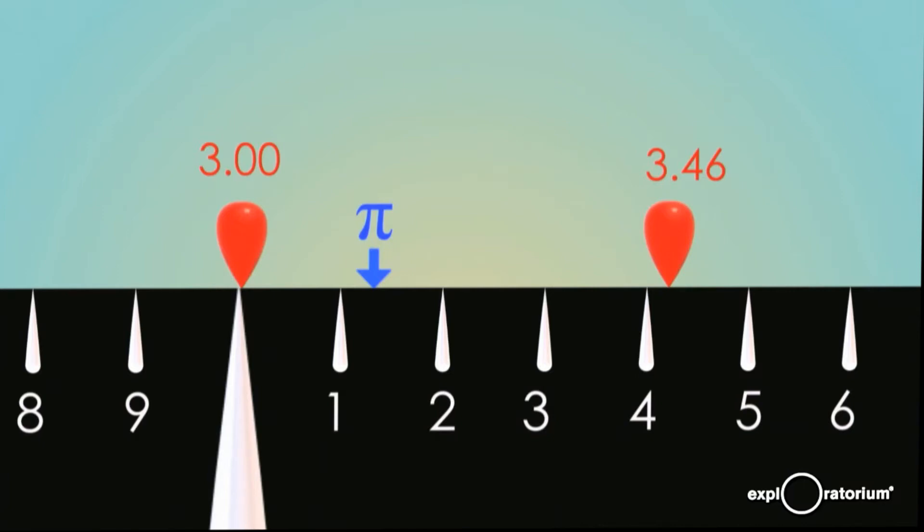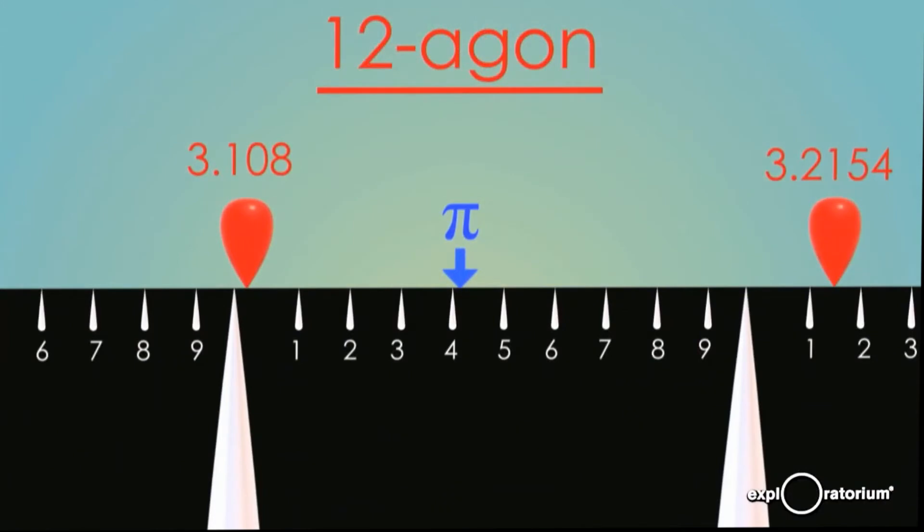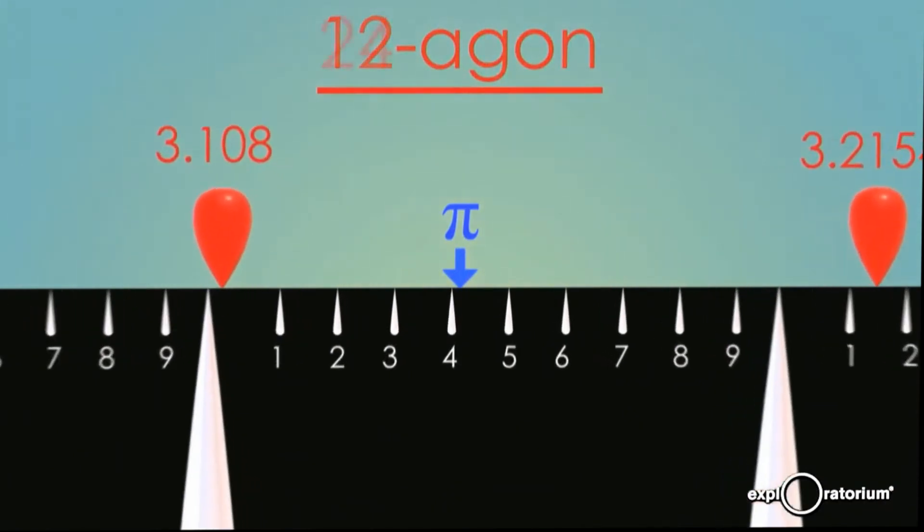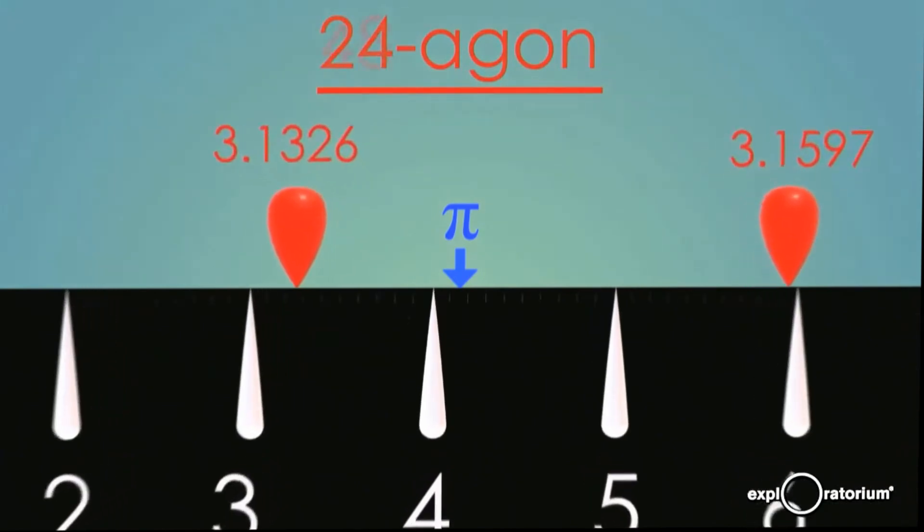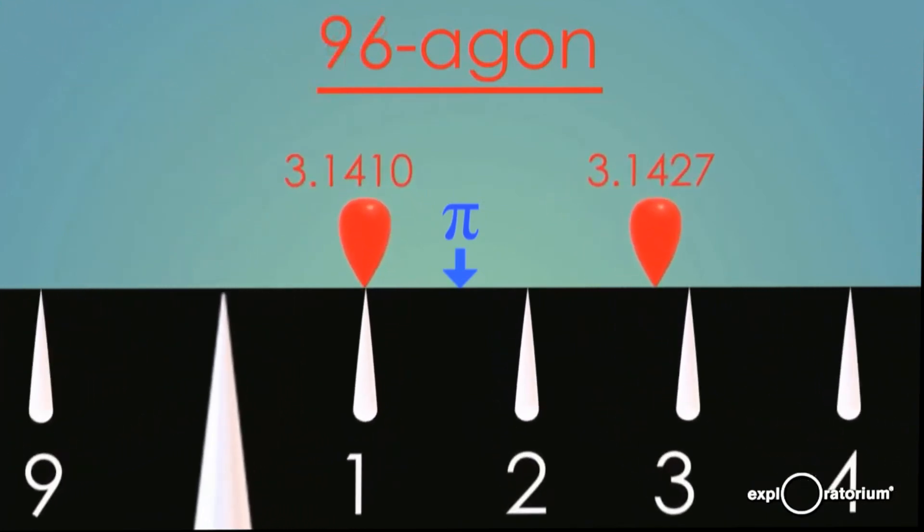So in principle, you could start over and do it with a tenagon or something like that. But the third observation that Archimedes made was that there's actually a trick to this. So this is the estimate we got by calculating with a polygon that had six sides. And if you know this estimate, there's actually a way to go directly from this estimate to the estimate you'd get from a polygon with twice as many sides. So we can go directly from a six-agon to the estimate we'd get from a 12-agon. And you can apply this procedure over and over and over again. So we can go directly from a 12-agon estimate to a 24-agon, from a 24-agon to a 48-agon, from a 48-agon to a 96-agon.